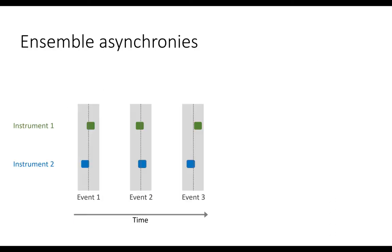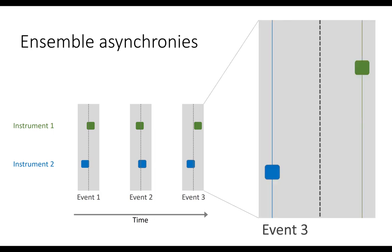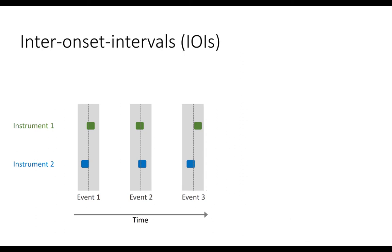Ensemble synchronization concerns the small micro-rhythmic asynchronies between different ensemble members' events, which one can analyze either directly as the temporal distance between different events or as the respective distances between one event and the mean location of the events in one metric position. To understand the underlying behavior, however, it can also be necessary to analyze the sequential inter-onset intervals within one instrument as compared to the analogous sequence of IOIs in other instruments.